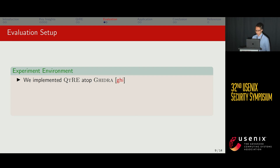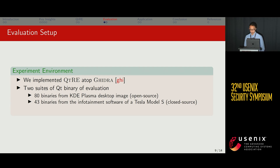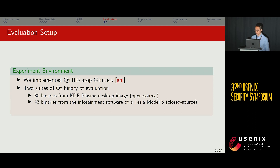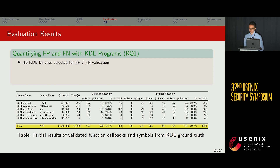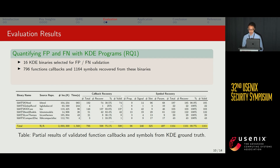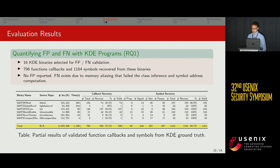For evaluation, we implemented QtIE on top of Ghidra and used two suites of Qt binaries: 80 binaries from the KDE Plasma desktop image as the open source binary set, and 43 binaries extracted from the infotainment software of a Tesla Model S as the closed source binary set. We ensured each binary had at least one callback or symbol instance available. For our first research question, we quantified false positives and false negatives using 16 KDE binaries for validation. QtIE successfully identified nearly 800 function callbacks and 1,100 symbols, with no false positives reported, though some false negatives exist due to memory aliasing that failed the class inference and symbol address computation algorithm.